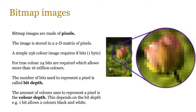For true color, 24 bits are required, which allows more than 16 million colors. The number of bits used to represent the pixel is called the bit depth. It also generates the color depth, which is the amount of colors available in a particular bit range. For example, for a one-bit image there are only two choices of color: black and white. For a two-bit image you get two to the power of two, which is four colors available — and that's the process of generating the color depth.